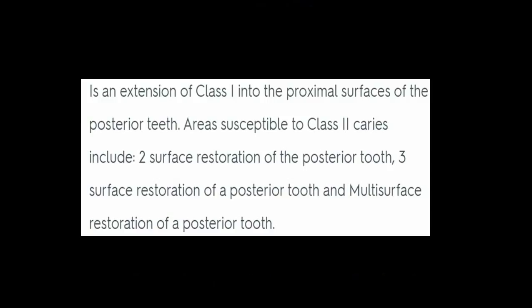Class II is an extension of Class I into the proximal surfaces of the posterior teeth. Areas susceptible to Class II caries include two-surface restoration of the posterior tooth, three-surface restoration of a posterior tooth, and multi-surface restoration of a posterior tooth.